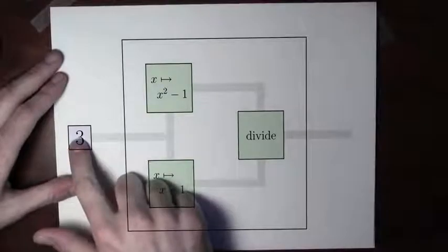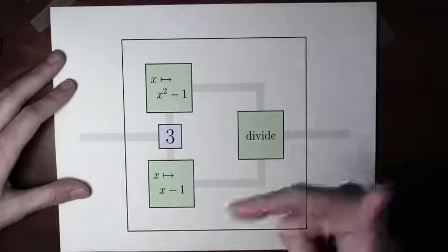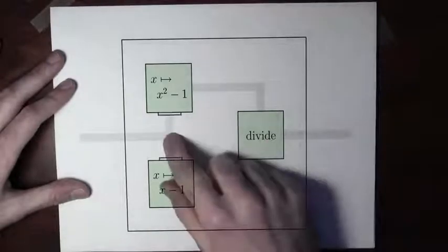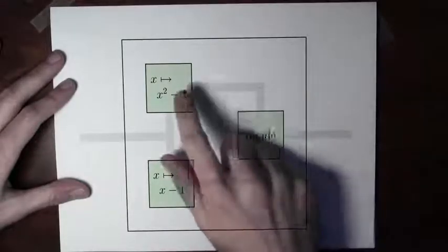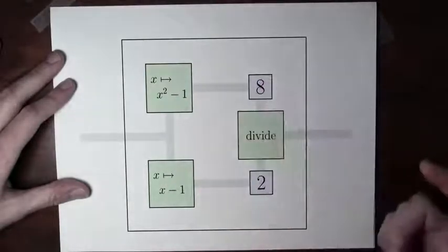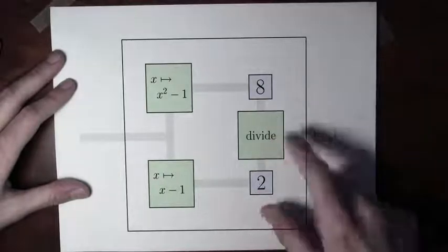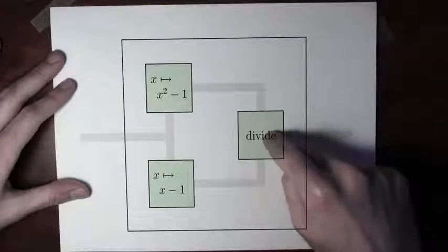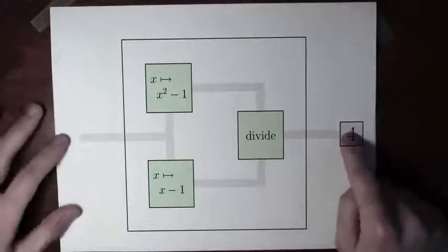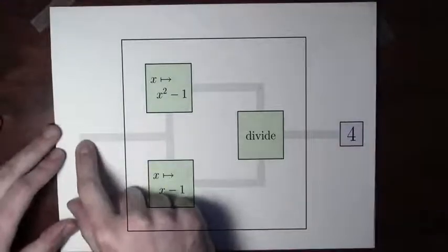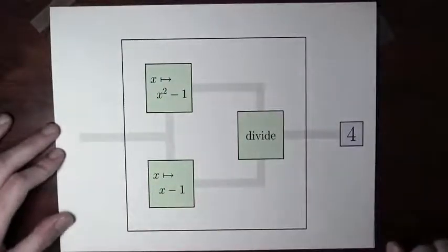Now let's see what happens when I take the number 3 and plug it into the function. I'll calculate the numerator and denominator separately. Up here, 3 squared minus 1 gives 8. Down here, 3 minus 1 gives 2. The 8 and the 2 get plugged into the division, and 8 over 2 is 4. That becomes the output of the function — input 3, output 4. Looking at it this way, I can see how all the steps are playing out.